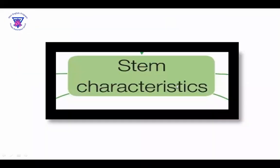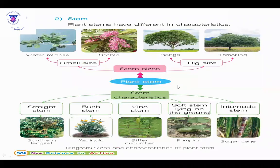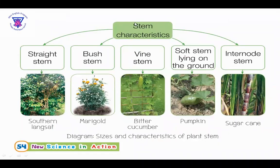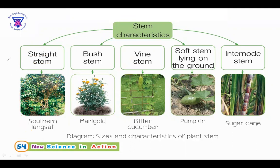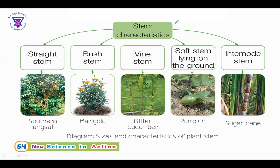This time, we are going to talk about the STEM characteristics. We have the Southern Langsat. The STEM of the Southern Langsat is a straight STEM. When we say straight — like this — that is straight. So, we have a straight STEM.